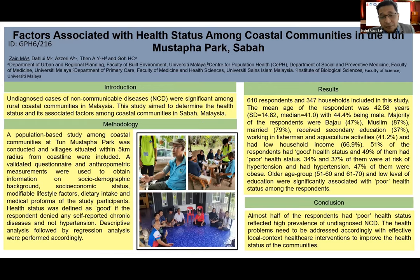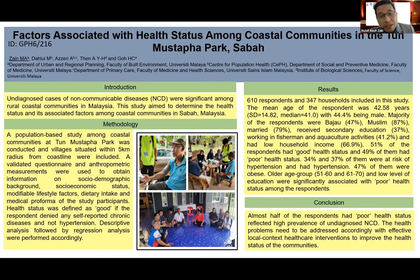We found that 49% of this coastal population were in poor health status. We also found that 34% of the population were at risk of hypertension, and another 37% had hypertension. Besides, we observed a prevalence of obesity at an alarming rate of 47%. From the regression analysis, we found that older age group and low level of education were significantly associated with poor health status among the respondents, indicating that respondents of older age group and low level of education are more likely to have poor health status.